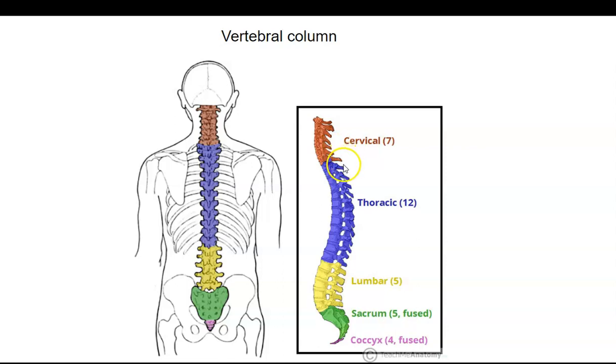T1 would be the first thoracic vertebra; we'd work our way all the way down to T12. Then the first lumbar vertebra would be L1, and the last one would be L5.